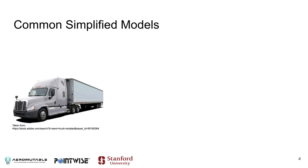A truck is not a simple body. It has mirrors, wheels, antennas, different gaps, different curves, and all those contribute to drag and to the aerodynamic behavior of the vehicle. But in order to better understand where these sources of drag are coming from, the scientific community has come up with simplified models that allow us to start studying different parts of the vehicle and figure out what's the drag contribution of those places.